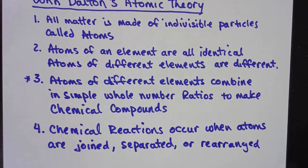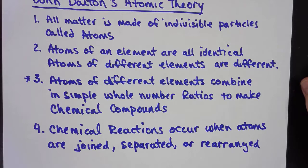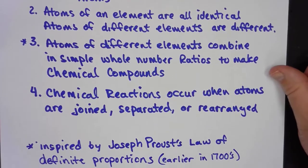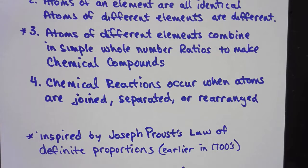Atoms of an element are all identical. So that means every aluminum atom, according to Dalton, would be identical. And if they're different elements, they're going to be different. The atoms will be different. Number three, the atoms of different elements combine in simple whole number ratios to make chemical compounds. And this was inspired by Joseph Proust's law of definite proportions earlier in the 1700s. And then finally, chemical reactions occur when atoms are joined, separated, or rearranged.